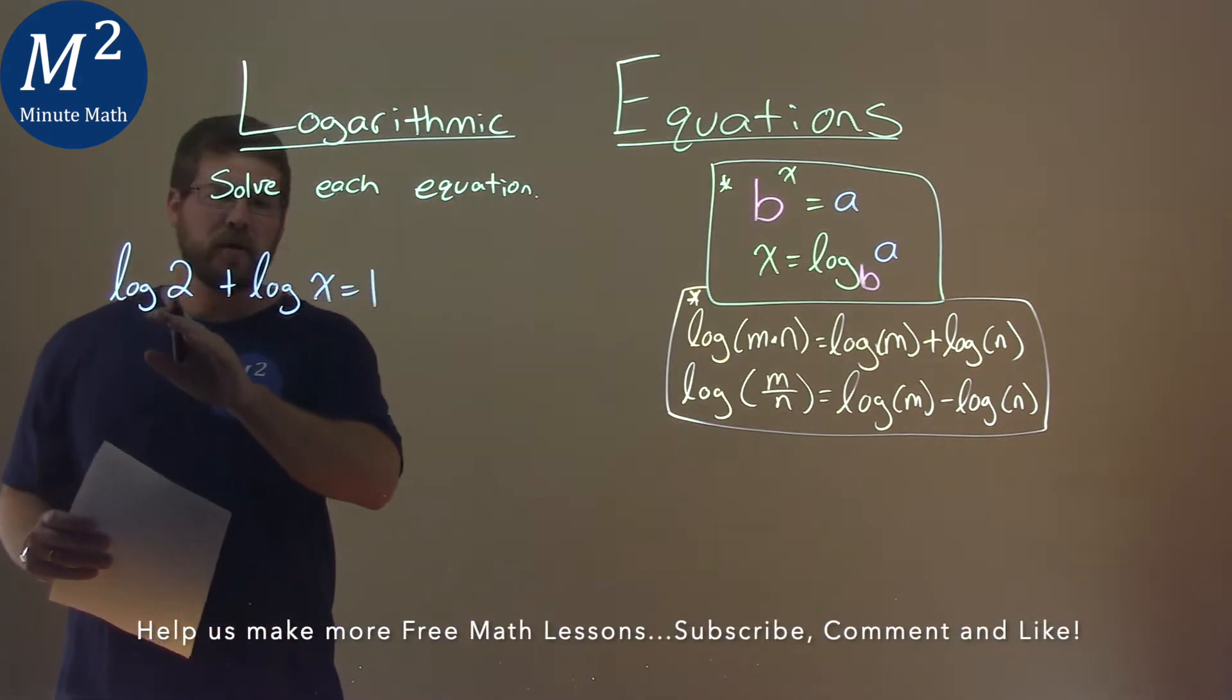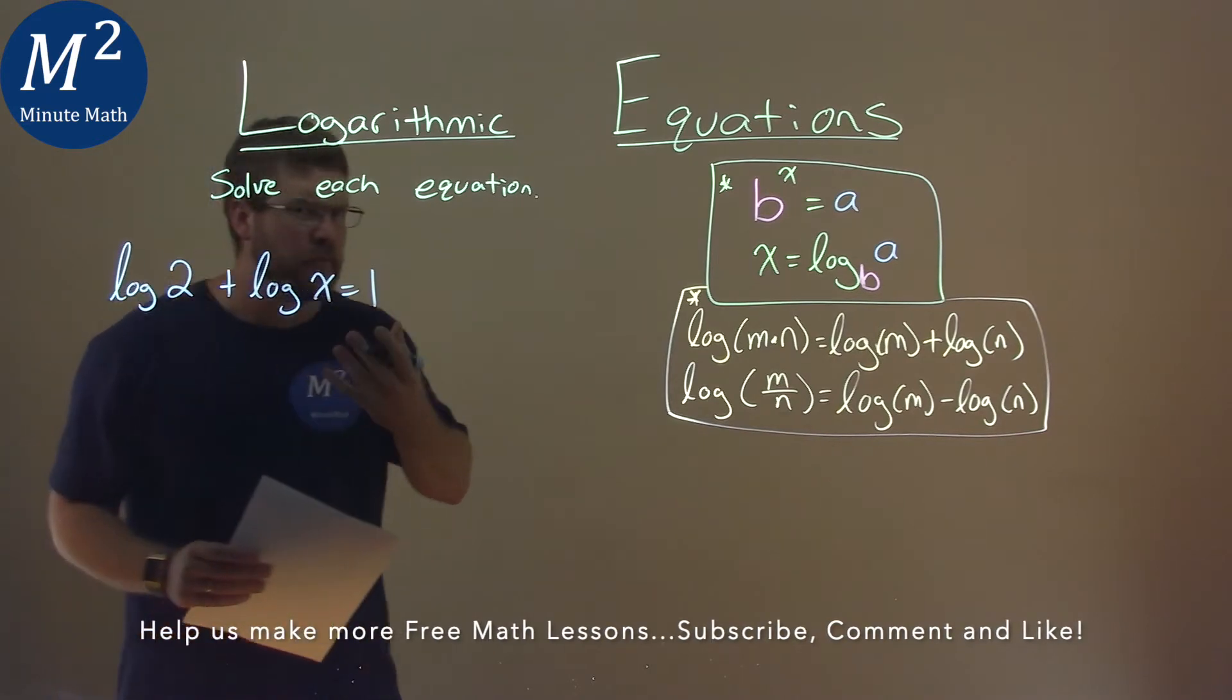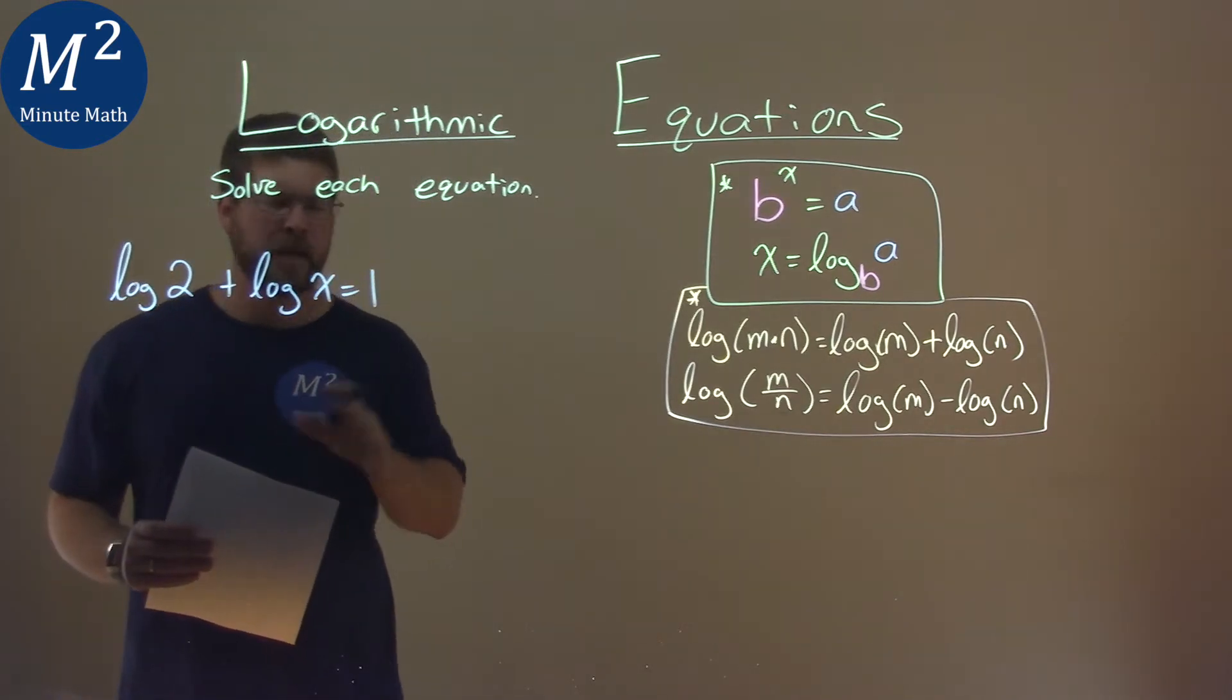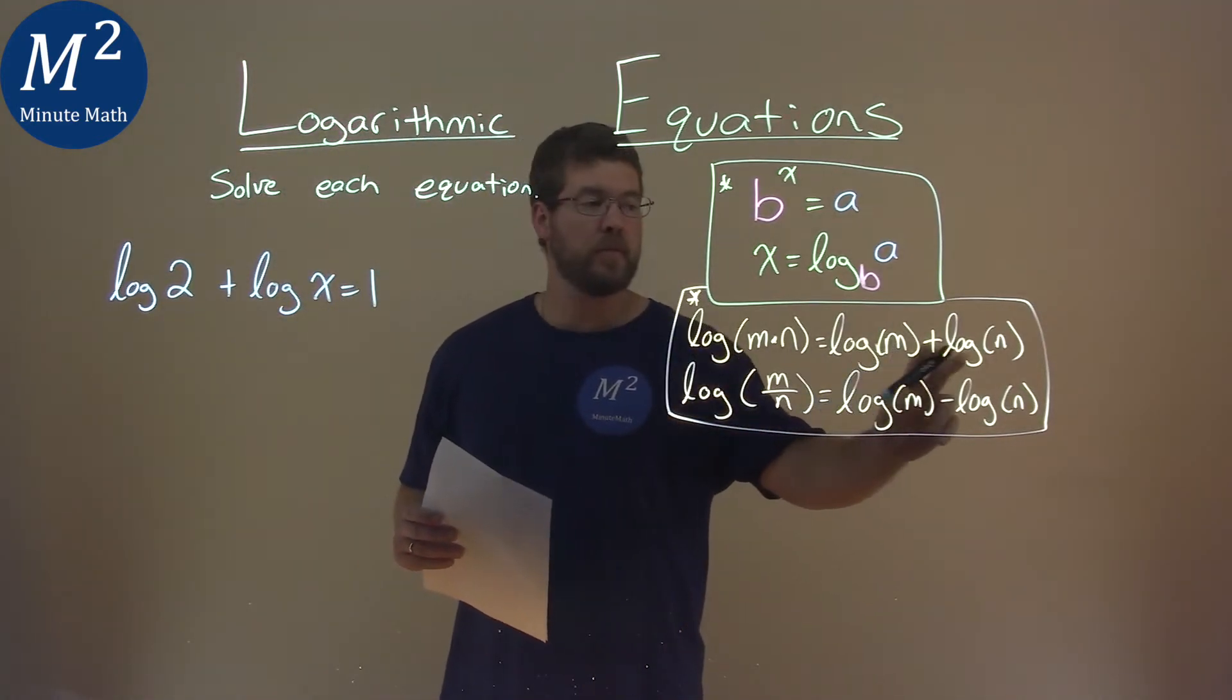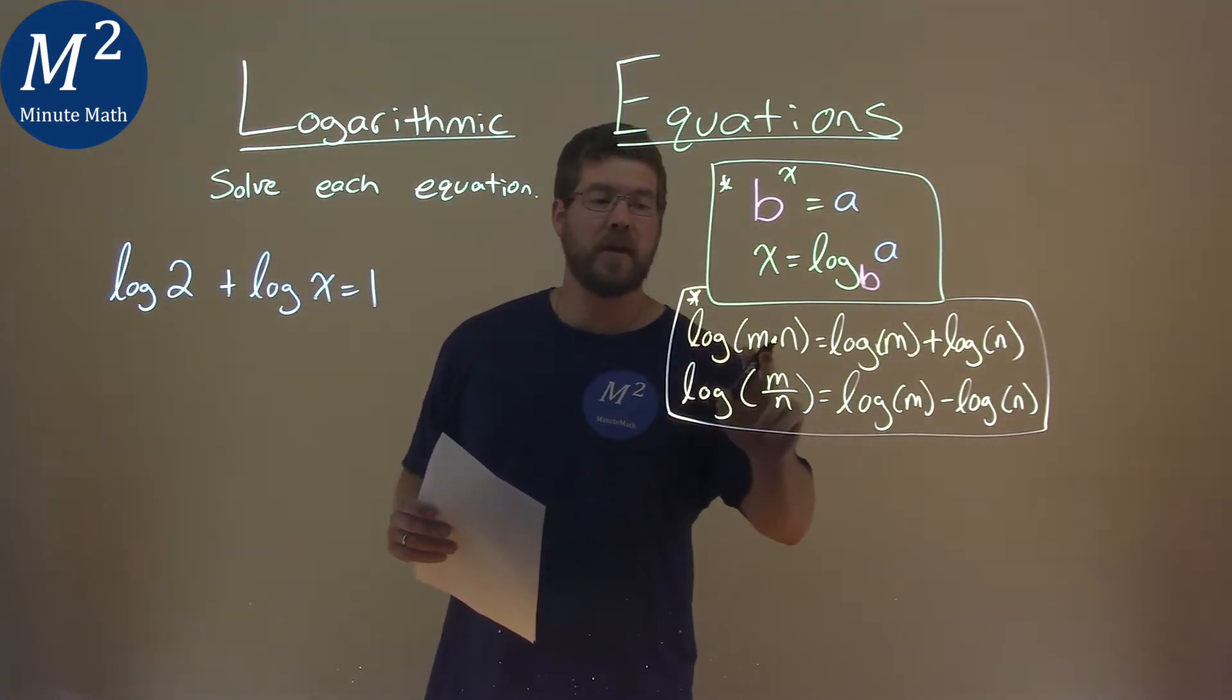Now, these are log with the same base of 10, and when it's not written, it's just going to be log base 10 there. Now with that, we can see our formula. They tell us if you have log of m plus log of n is equal to log of m times n.